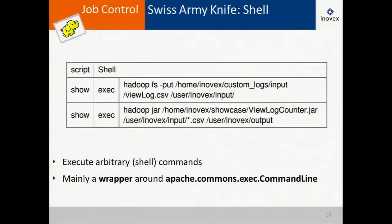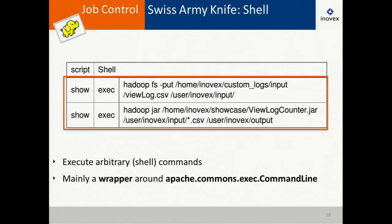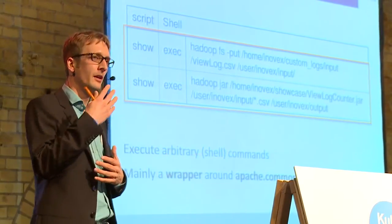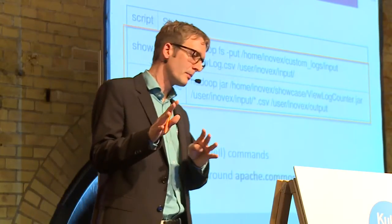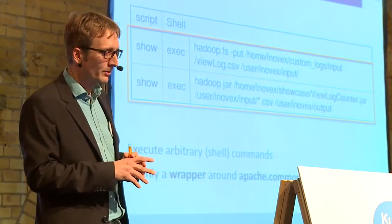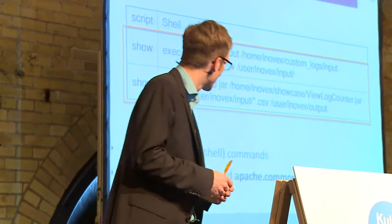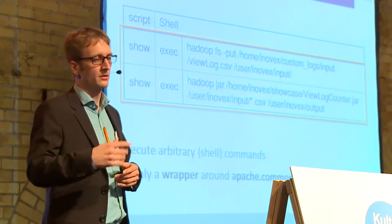The first way is a shell fixture — what I call the Swiss Army knife. This fixture enables you to write any arbitrary bash command on the wiki page. Here you call the Hadoop binary, upload a file to HDFS, and run a Hadoop job. You can basically use FitNesse as an alternative bash interface. This works, but Mr. Ackermann would still have to write bash. We didn't write much code for this fixture — it's mainly a wrapper around Apache Commons Exec command line.